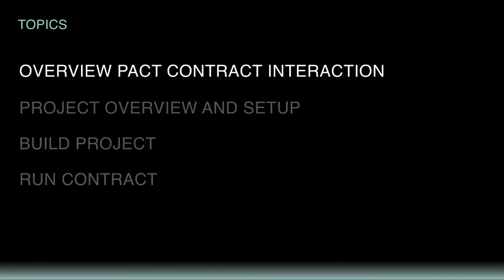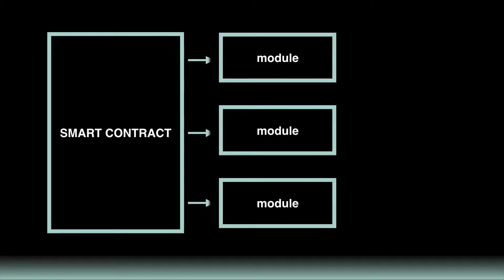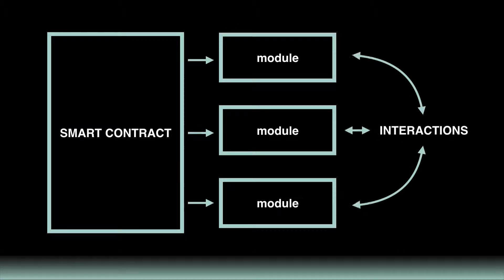Let's get started. Contract Interaction allows you to set up more complex smart contracts by working with modules across multiple files. Having access to separate files allows you to break up your smart contracts into more manageable file sizes. It also allows you to use helpful files that other developers have created.